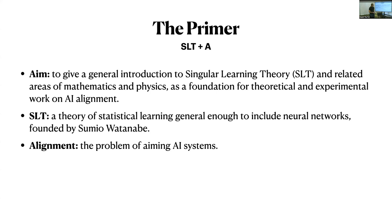The other element of the title is alignment. We'll hear a lot more about what exactly that is starting this afternoon. I'll just paraphrase Norbert Wiener by saying that alignment is the problem of aiming AI systems. By analogy, think about the combination of a bow and arrow — another thing that you aim. It has two parts: you configure the initial conditions of the bow and arrow, then you release the arrow. Once you've released it, you don't have much more control over where it goes, so you want to get the initial conditions correct.